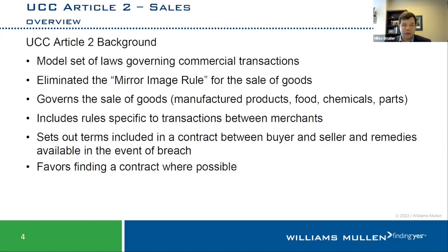A little background on Article 2. The UCC — the Uniform Commercial Code — is a model set of laws governing commercial transactions, published and continually updated by the Uniform Laws Commission. It's a model set of rules, so it doesn't have the effect of law except through codification by each state. All 50 states have adopted the UCC, but many have made their own adjustments and all have different judicial interpretations. In North Carolina, the UCC is codified at Chapter 25 of the General Statutes.